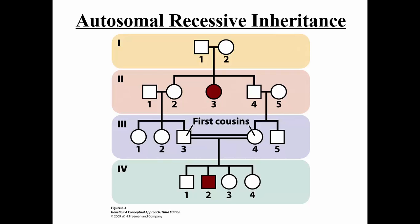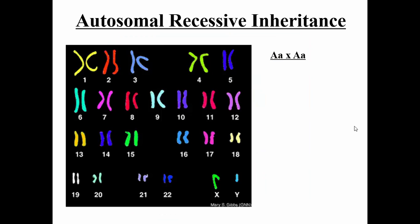What makes us think it's recessive? What makes us think that this mutation is recessive is the fact that you don't see the mutation expressed in one generation, then you see it appear in the next generation. You don't see it in this generation, then you see it again in this generation. The skipping of generations makes you think that it's a recessive inheritance pattern.